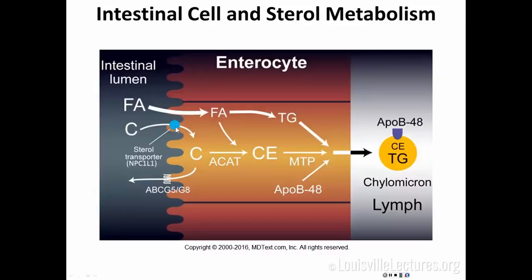When cholesterol gets into the cell, it has to be esterified to form the cholesterol ester. For plant sterols that are absorbed, there is another protein that will transport them out if they are not esterified. A mutation in that protein causes what is called phytosterolemia (cytosterolemia), where you get accumulation of plant sterols. That does cause a problem where you can see tendinous xanthomas — it is not an elevation in cholesterol, but an elevation in phytosterols. It can also be treated with ezetimibe.